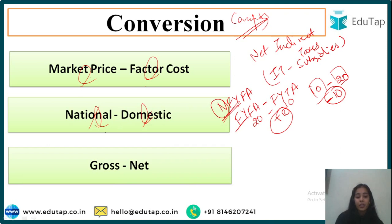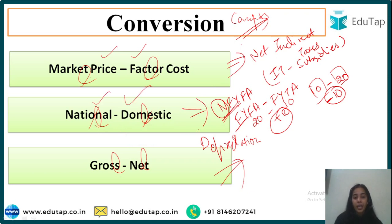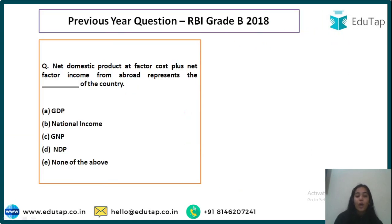Gross and net can be converted by taking into account depreciation. To summarize: if MP and FC differ, use net indirect taxes; if national and domestic differ, use net factor income from abroad; if gross and net differ, use depreciation.